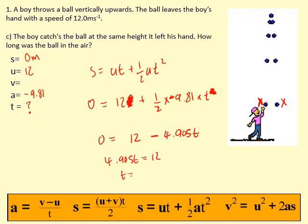And t is equal to 12 divided by 4.905, which gives me 2.45 seconds in the air.